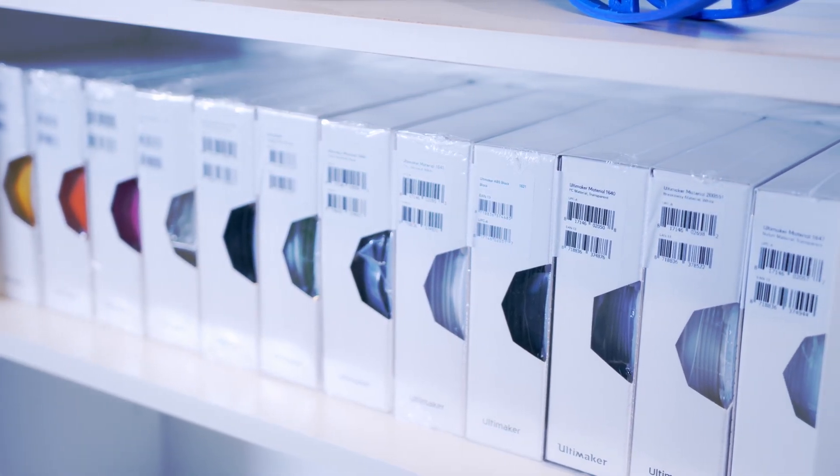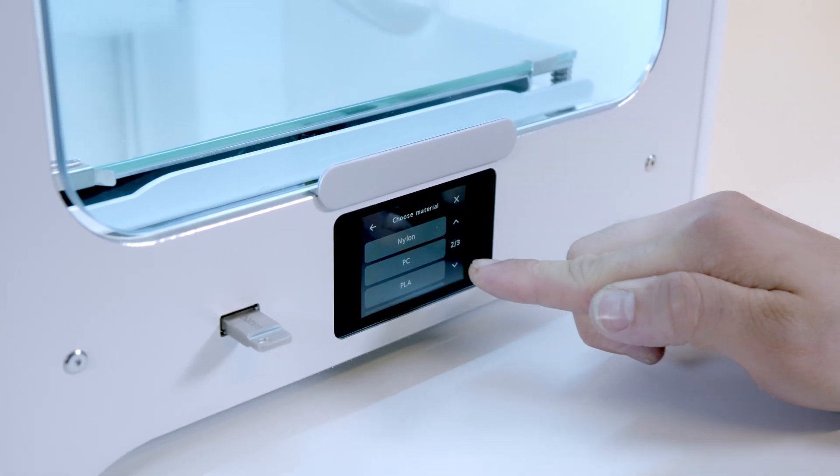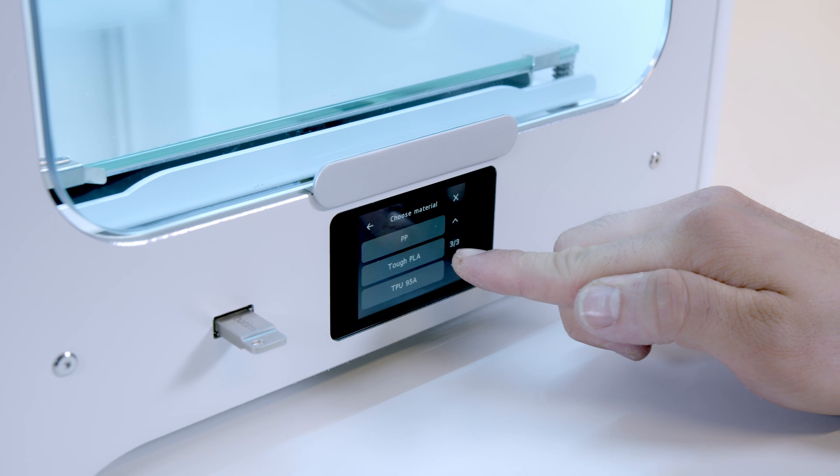With firmware 1.3 you can now select these attributes within the printer, giving you full access to the marketplace materials compatible for the Ultimaker 2 Plus Connect.